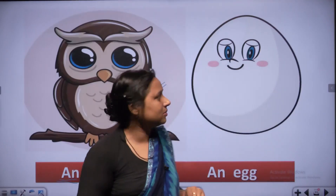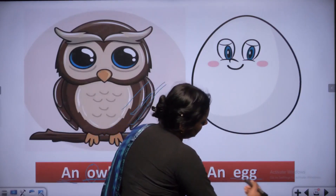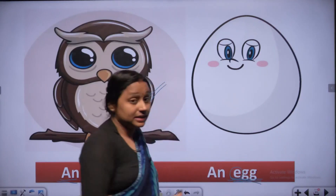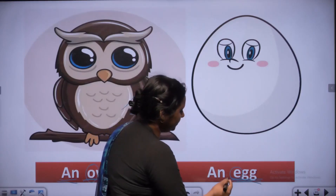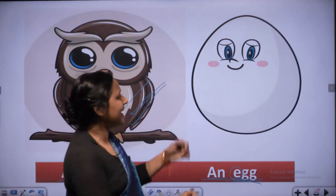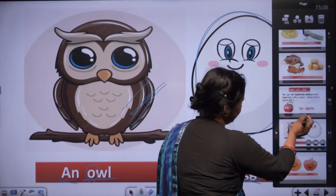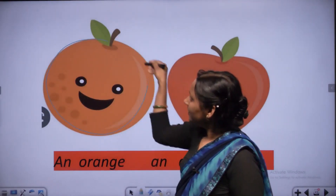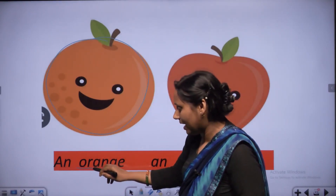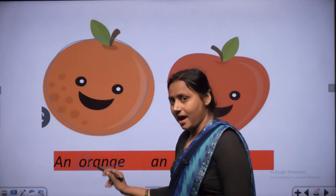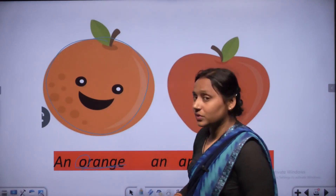This is an owl. This is E, G, G - egg. First letter is E. E is a vowel sound, so we use AN - an egg. This is the picture of an egg. Now look at the picture - this is orange. O, R, A, N, G, E - starting with O. O is a vowel letter, so we use AN.